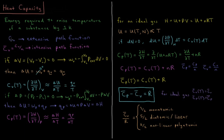Cv, the constant volume heat capacity, is an extensive path function. Cv-bar, the constant volume molar heat capacity, is the constant volume heat capacity divided by the number of moles, and that is an intensive path function.